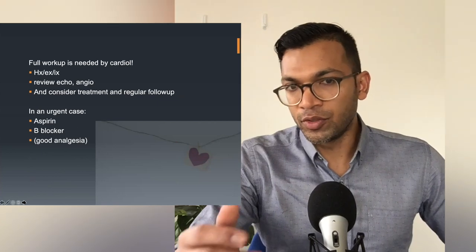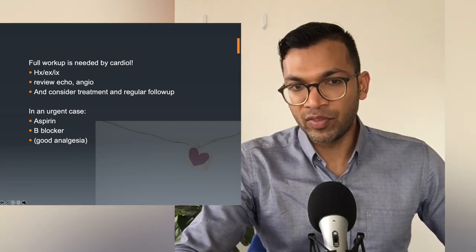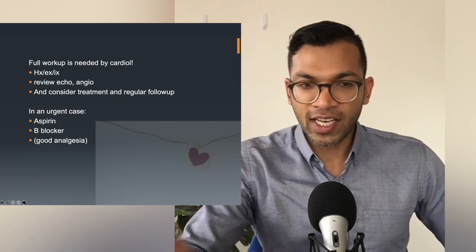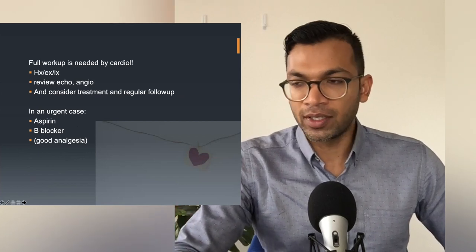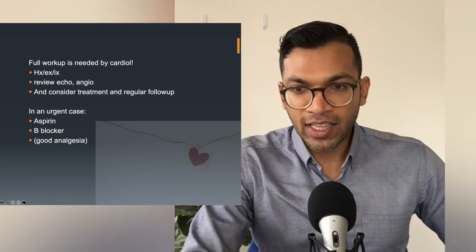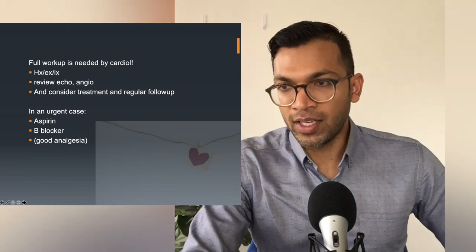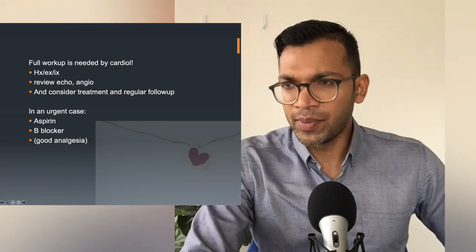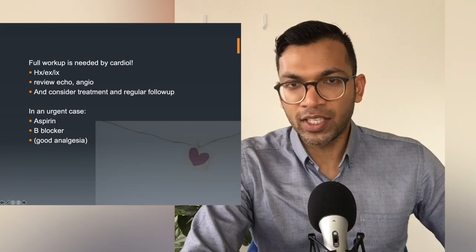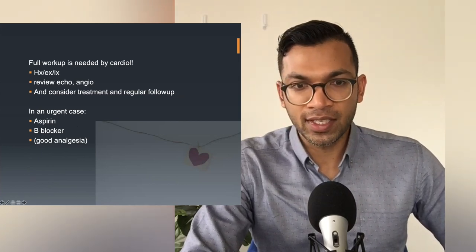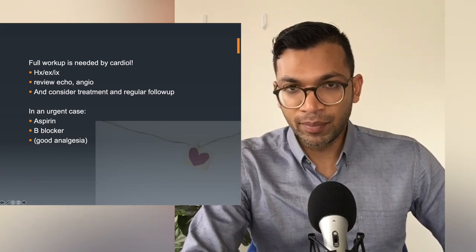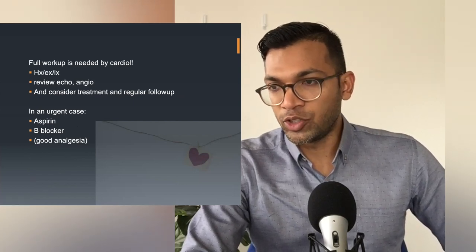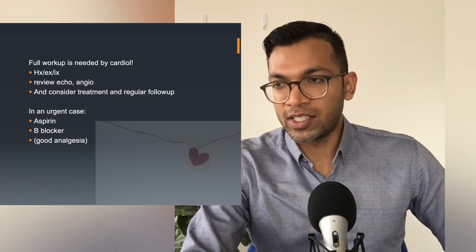To summarize: for an elective case, do a full workup — review, echo, angiogram, consider treatment, regular follow-up. For an urgent case: aspirin, beta blocker, ensure good analgesia. Post-operatively, consider whether they need other anti-platelets like clopidogrel. There are new ACC/AHA guidelines on dual antiplatelet therapy stating that essentially everyone who's had even a mild non-STEMI should be on dual anti-platelets for at least 12 months. But this is very much cardiology territory.